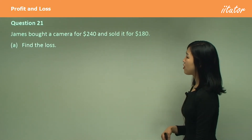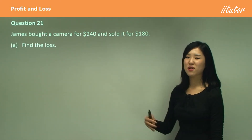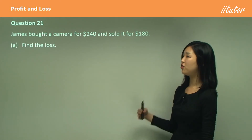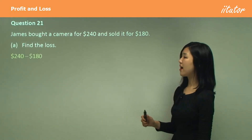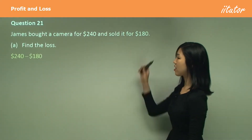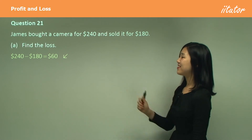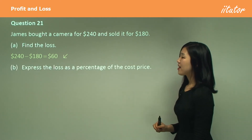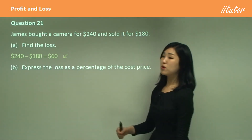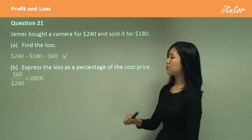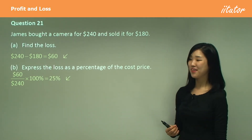James bought a camera for $240 and sold it for $180. He sold it for less because it's secondhand, so he made a loss. To find the loss, we find the difference between the cost price and selling price: $240 minus $180 gives $60. For part B, to express the loss as a percentage of the cost price: 60 over 240 times 100 gives 25%.